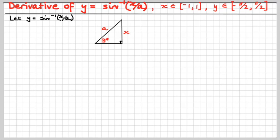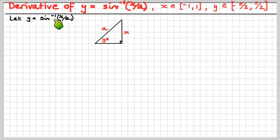Let's draw a triangle — the magic triangle has appeared again to help us. We've got y is the angle whose sine is x over a. That says pictorially what that says. There's the third side by dear old Pythagoras, our honorary guest again in this video. That's Pythagoras' theorem for the third side of the magic triangle.